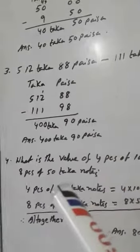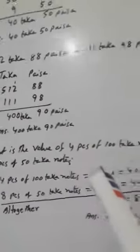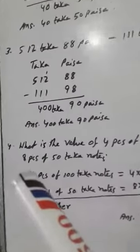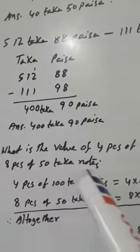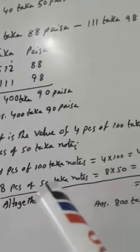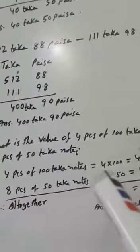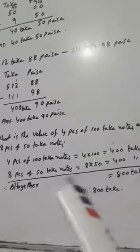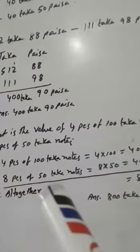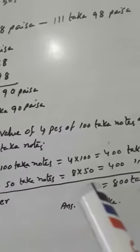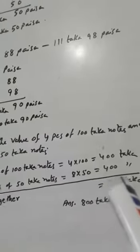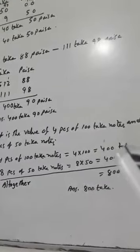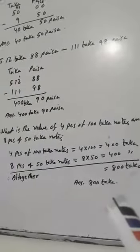What is the value of 4 pieces of 100 taka notes and 8 pieces of 50 taka notes? 4 pieces of 100 taka notes equals 4 × 100 = 400 taka. And 8 pieces of 50 taka notes equals 8 × 50 = 400 taka. Therefore altogether: 400 plus 400 equals 800 taka.